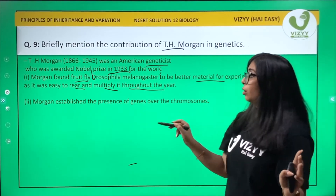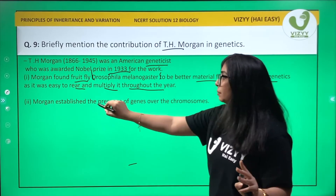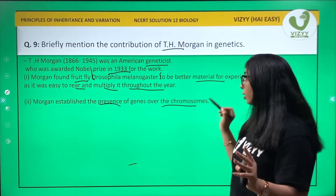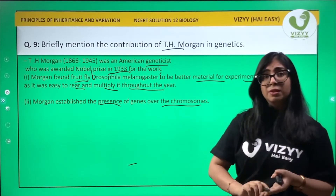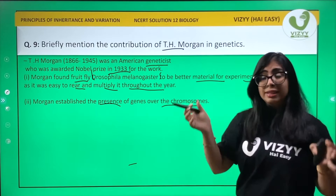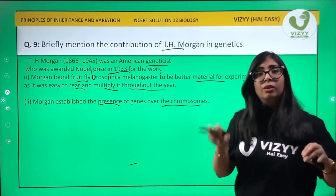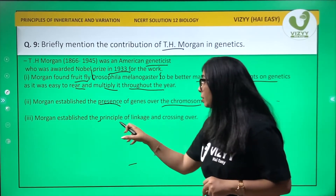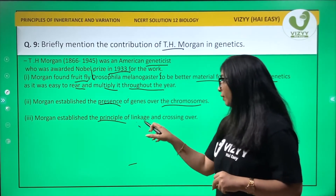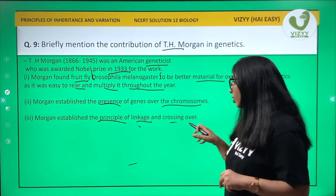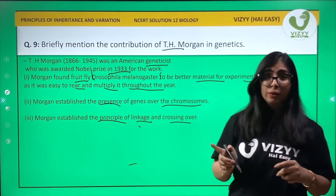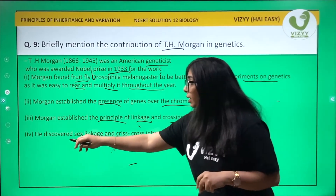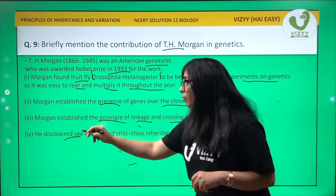Morgan established the presence of genes on the chromosome — he was the person who said that genes are present on chromosomes. Next, he established the principle of linkage and crossing over.